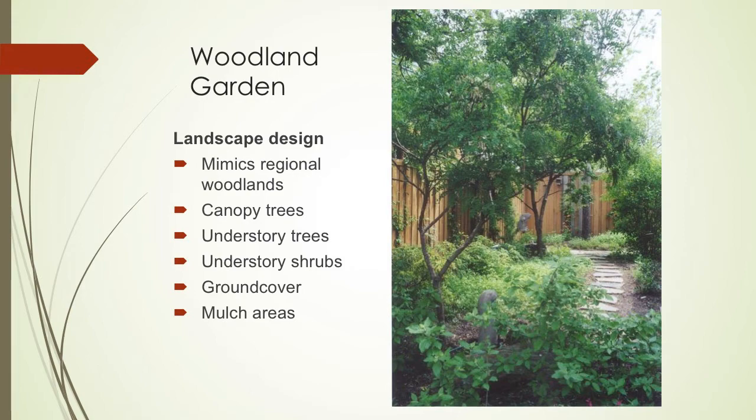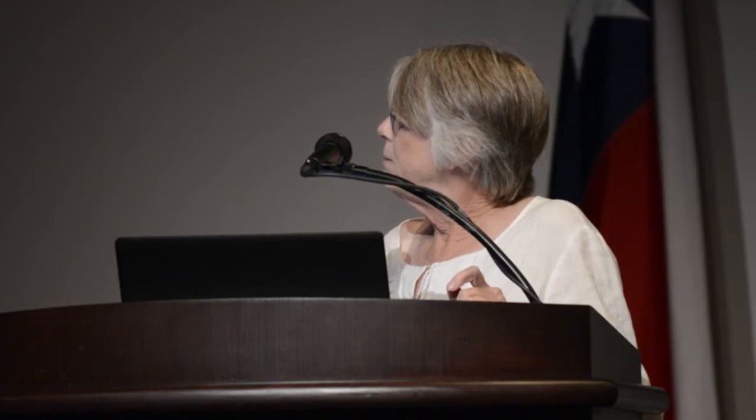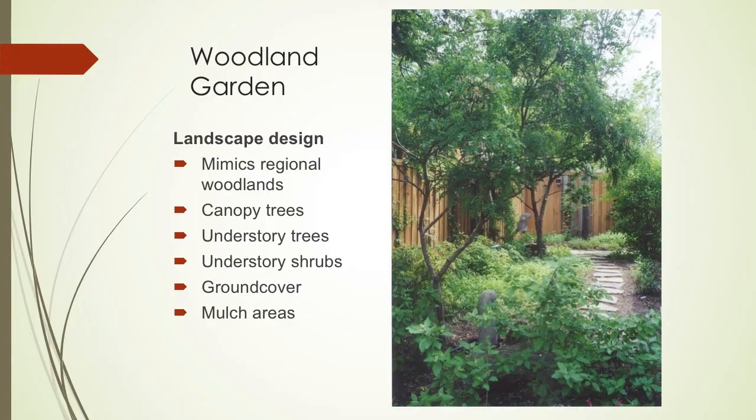Now we're going to look specifically at woodland gardens and how that works in your home landscape. In landscape design, we mimic the regional woodlands using our regional native plants. Start with canopy trees, put in some understory trees, then understory shrubs, some ground covers, and mulch areas. Don't worry that every spot has to be covered with plants — it doesn't. Forest floor has mulch areas.